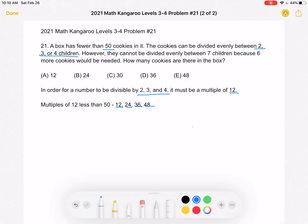We also know that if we add 6 to the number of cookies, we get a number divisible by 7. So let's add 6 to each of these numbers.